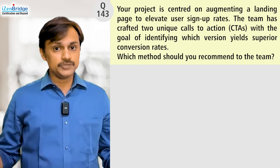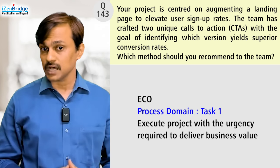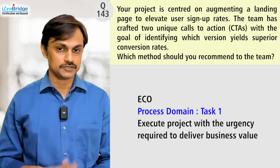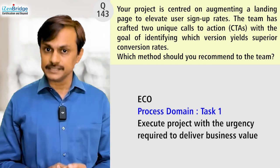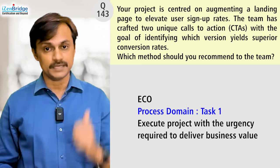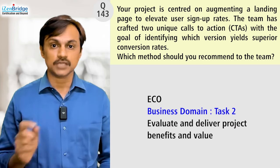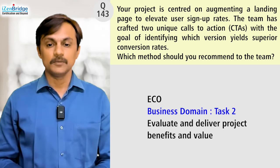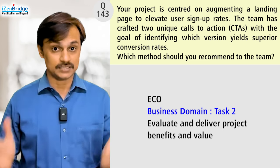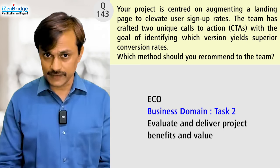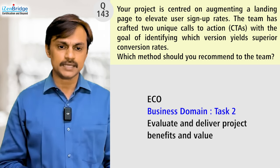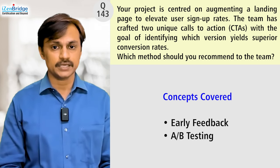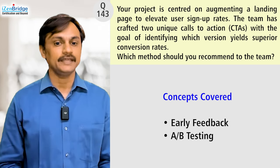When we talk about ECOs, this is mapped to the process domain task one, which focuses on executing projects with the urgency required to deliver business value and validating business value delivery on a frequent basis. It also maps to task two of the business domain, which focuses on evaluating and delivering project benefits and value. Here we are evaluating benefit delivery by using A/B testing, which involves early feedback as a key topic and technique.